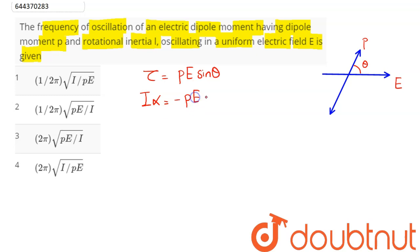So we can say I·α = -pE·θ, as for small angular displacement sin θ is approximately equal to θ. Now we can say this angular acceleration α can be written as